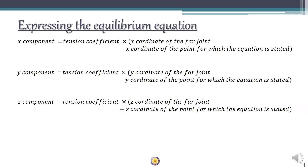The method of expressing the equilibrium equation remains the same. To represent the x-component of a member force, write it as the tension coefficient of the member multiplied by the x-coordinate of the far joint minus the x-coordinate of the near joint. Similarly, write the y-component and z-component. The tension coefficient is the tension in the member divided by its length. If the tension coefficient is negative the force is compression; if positive, it is tension.